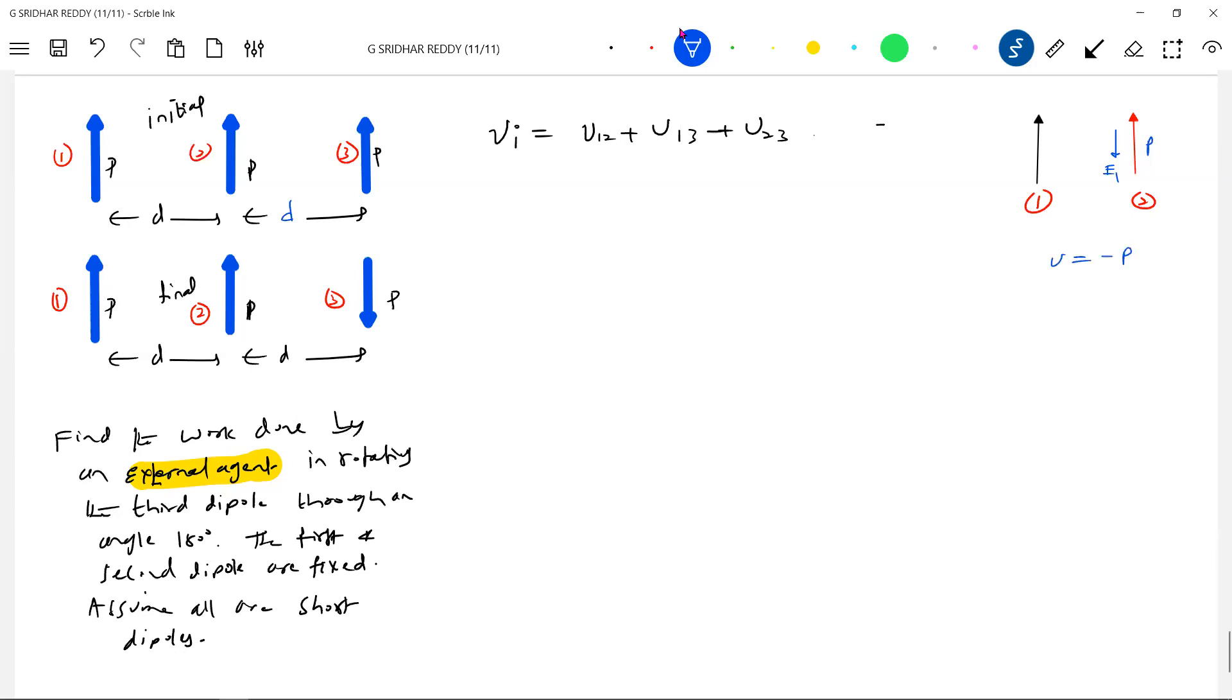U will be minus P bar dot E bar. So this should be equal to minus P E cos 180, should equal to just P E. I think this would be a better idea. What is the electric field? Let's write that also. This should be equal to how much.